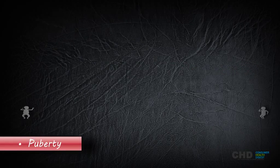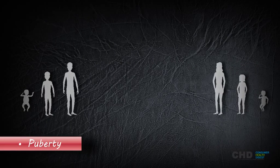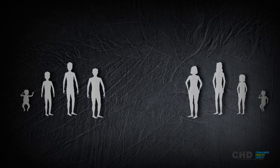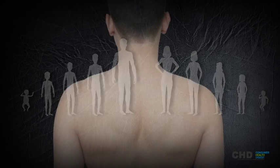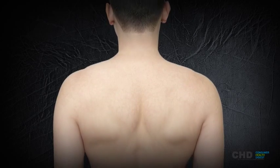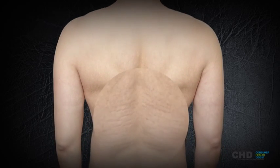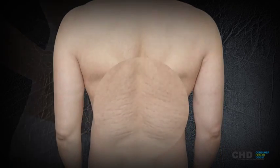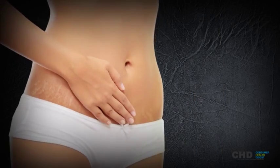This is the period of growth spurt, where body parts of adolescent boys and girls expand and grow in size or thickness. Usually, boys get stretch marks on their back and shoulders, whereas girls tend to get stretch marks on their breasts, thighs, and hips.